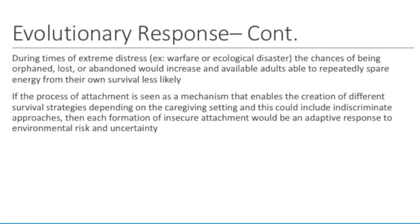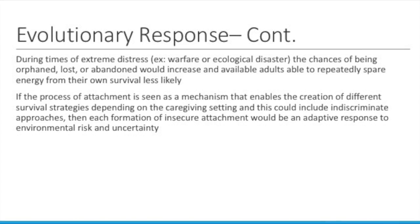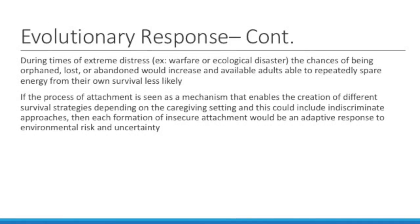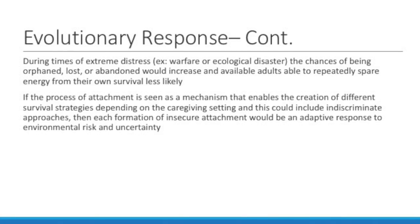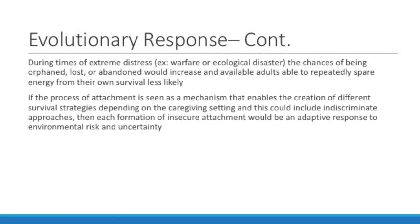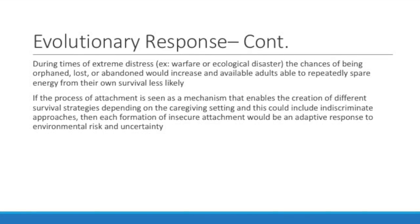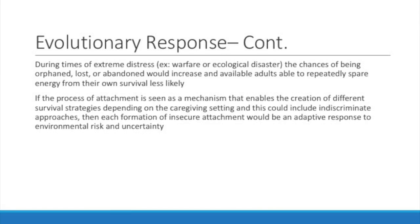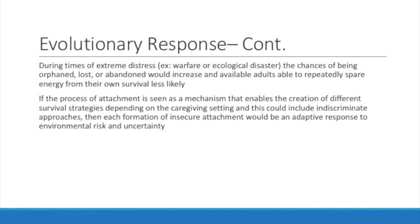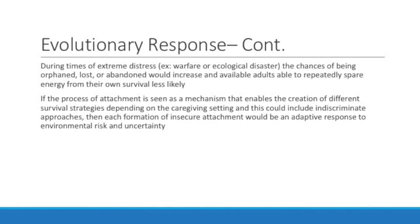During times of extreme peril, such as warfare or disaster, being orphaned, lost, or abandoned would be more likely, and available adults able to repeatedly spare energy from their own survival less likely. With the goal of passing on genes, these children would be gaining characteristics crucial for reproductive success in an uncertain adulthood. These could include behaviors congruent with disinhibited behaviors that optimize survival. In our ancestral surroundings, this could have been a fitness-enhancing behavior pattern, honed by evolution, and established as an option within the general population as part of the process of adaptation.